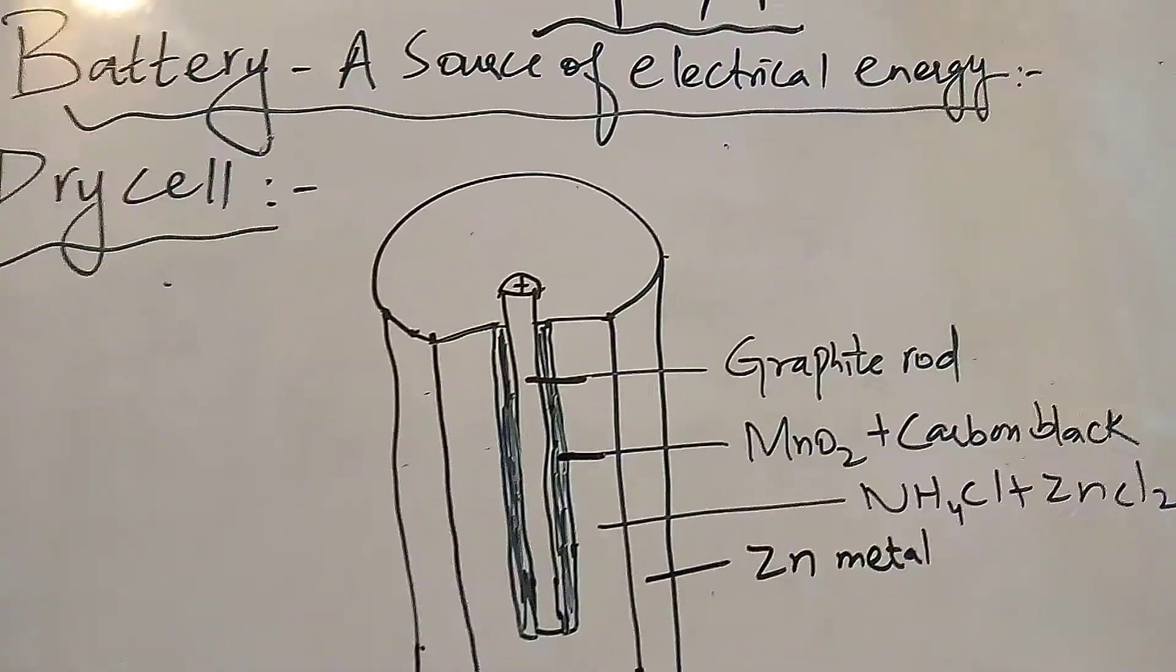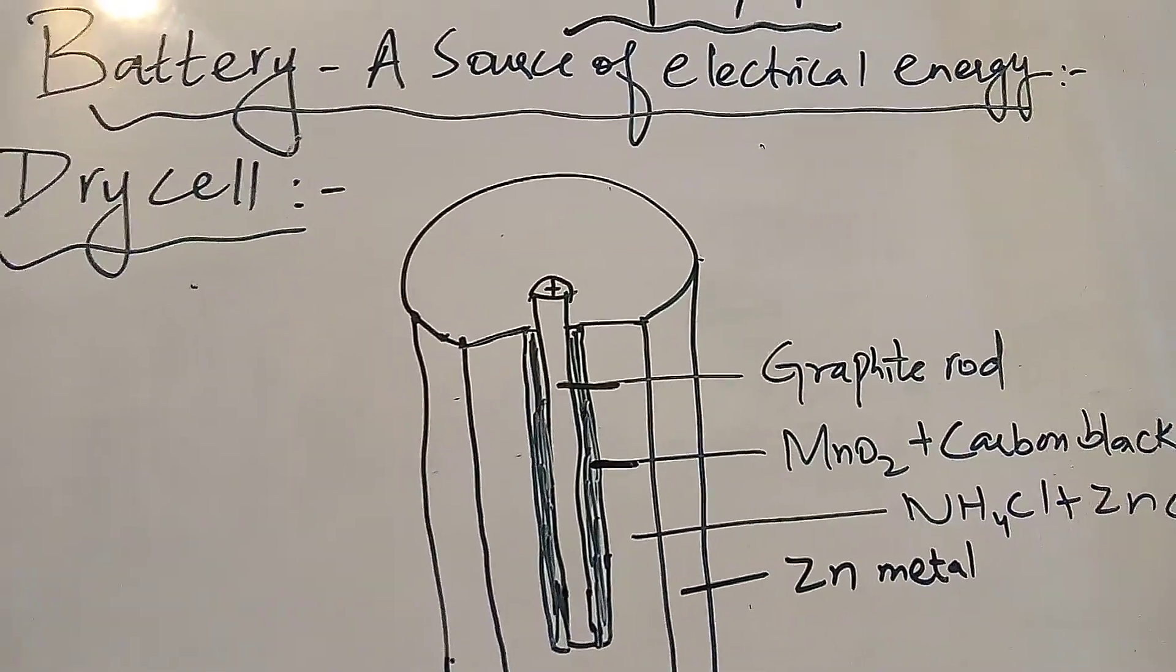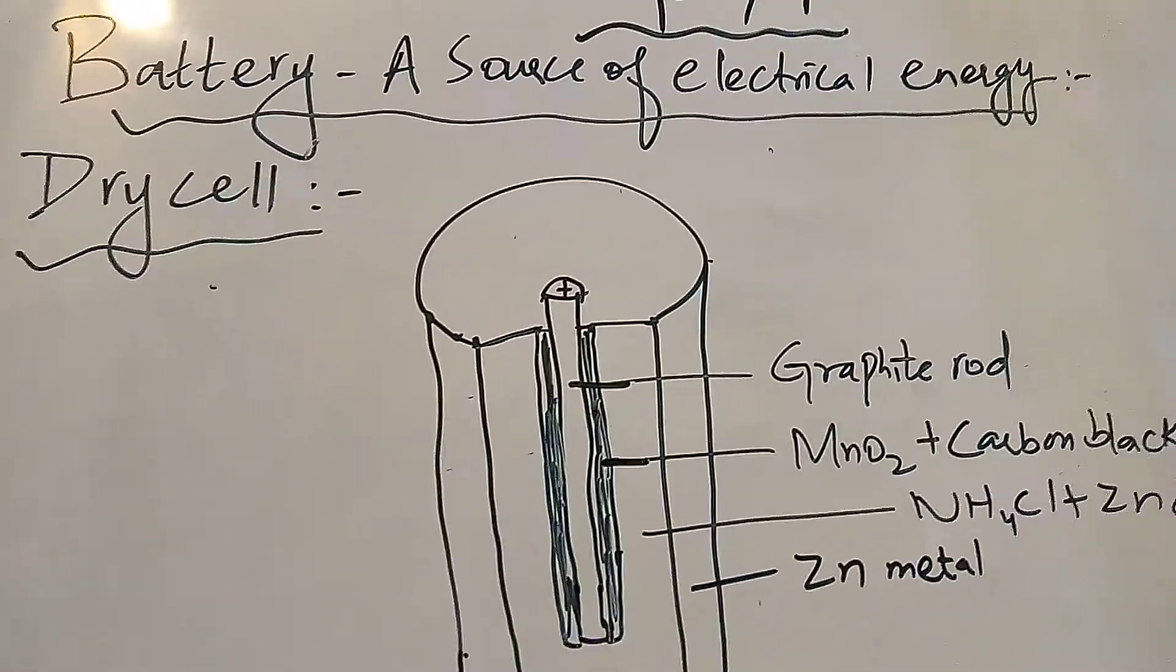Battery is basically a group of cells. It is a group of galvanic cells which are joined in series. Battery electrical current generates by redox reaction.